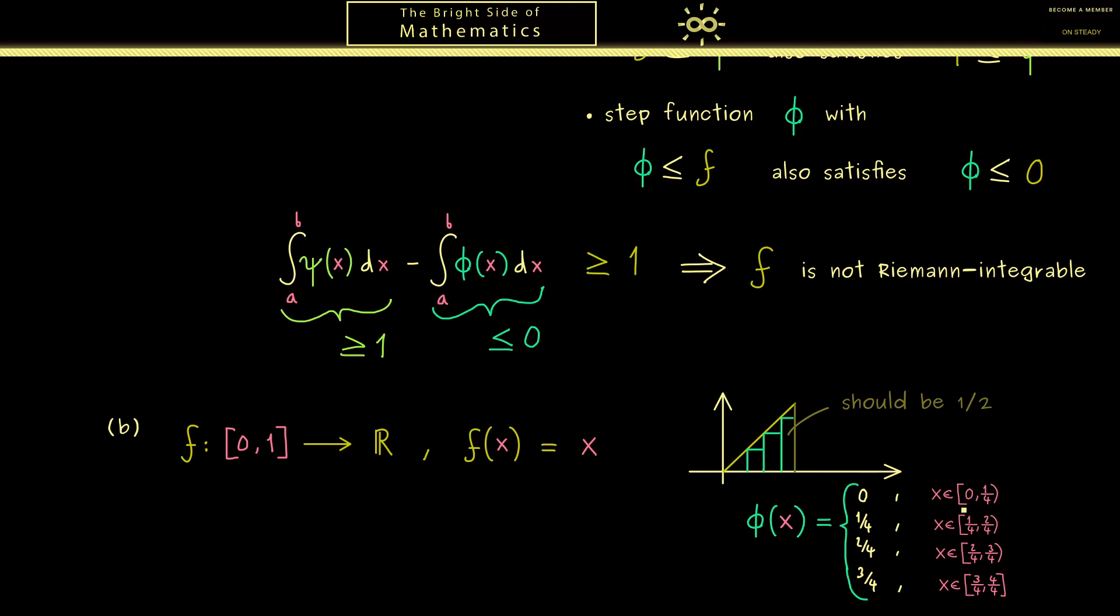So we have the interval 0 to 1 quarter, 1 quarter to 2 quarters and so on. Okay so you see this is a well defined step function you can choose for the approximation from below. It has exactly 4 equidistant steps therefore let's put a 4 into the index here.